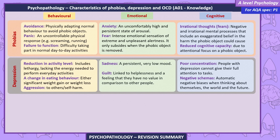Depression — Behavioral: Reduction in activity level, includes lethargy and lacking the energy needed to perform everyday activities; a change in eating behavior, either significant weight gain or weight loss; aggression to others or self-harm. Emotional: Sadness, a persistent very low mood; Guilt, linked to helplessness and a feeling that they have no value compared to other people. Cognitive: Poor concentration — people with depression cannot give their full attention to tasks; Negative schemas, automatic negative biases when thinking about themselves, the world, and the future.